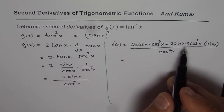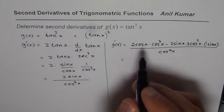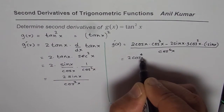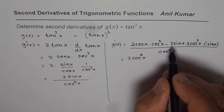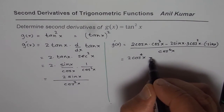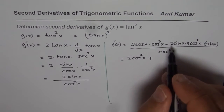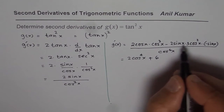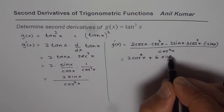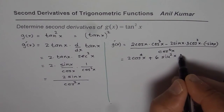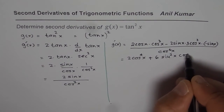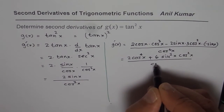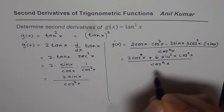Now let us try to simplify. What we have in the numerator is 2 cos to the power of 4 x, and minus times minus becomes plus: 2 times 3 is 6, giving us 6 sin square x cos square x, all divided by cos to the power of 6 x.